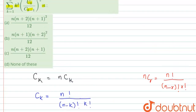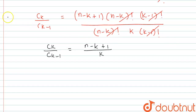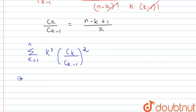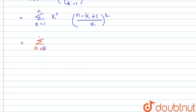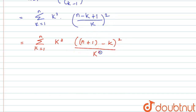We now use this result to evaluate the expression: summation k=1 to n of k³·(Ck/Ck-1)². Substituting Ck/Ck-1 = (n-k+1)/k, this becomes summation k=1 to n of k³·((n+1-k)/k)². This simplifies to summation k=1 to n of k³·(n+1-k)²/k². We can cancel k³/k² = k, using the (a-b)² formula where a = n+1 and b = k.